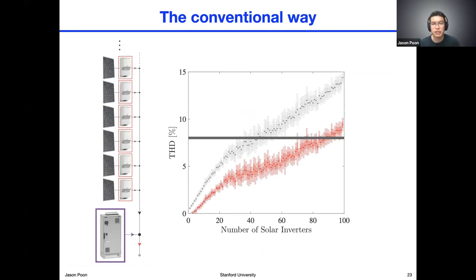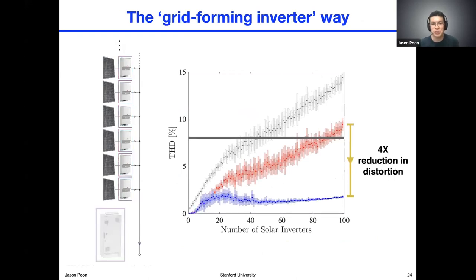We can see in this cartoon that if we pick the phase shifts of these various waveforms in this particular way, we can actually dramatically reduce the magnitude of distortion in the aggregate waveform. We formulated it as an optimization problem with different cost functions to explore. Importantly, we could formulate this as a decentralized optimization problem. Evaluating how this technique compares to the conventional way — we can achieve a dramatic reduction in distortion even compared to the case of using an active power filter — up to 4x reduction in THD.